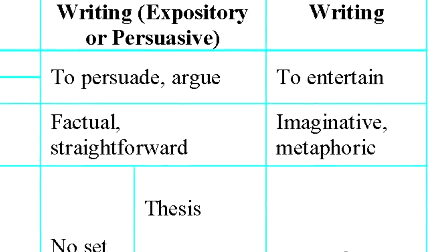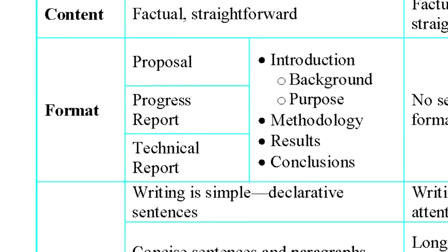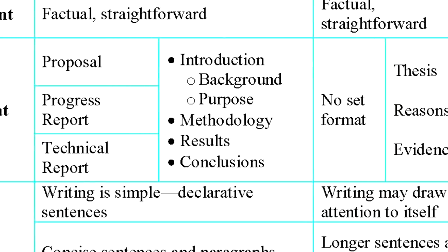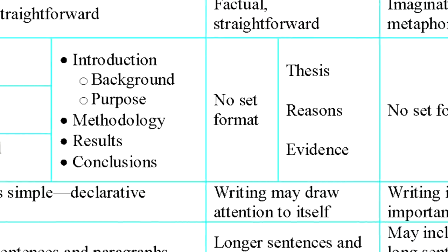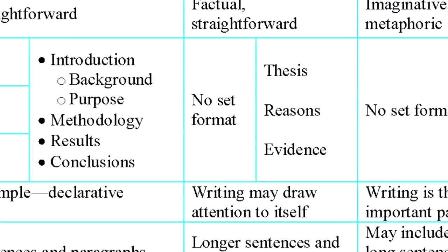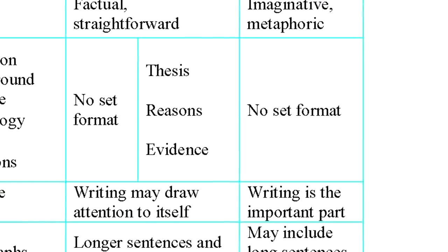Now, the format of technical writing, let's say the standard documents proposal progress reports, technical reports, they do follow that IMRD format. Here I've got introduction with methodology, results, and conclusions. A general academic writing may have no set format, but it does usually follow thesis reasons and evidence. That's how we lay out an argument. We persuade people by having a thesis and then supporting that with reasons and then giving evidence for that. The technical writing often has that included. So we have a hypothesis with methodology with results. The format of creative writing, there is no set format. Because it's wanting to entertain, it can do whatever it wants.